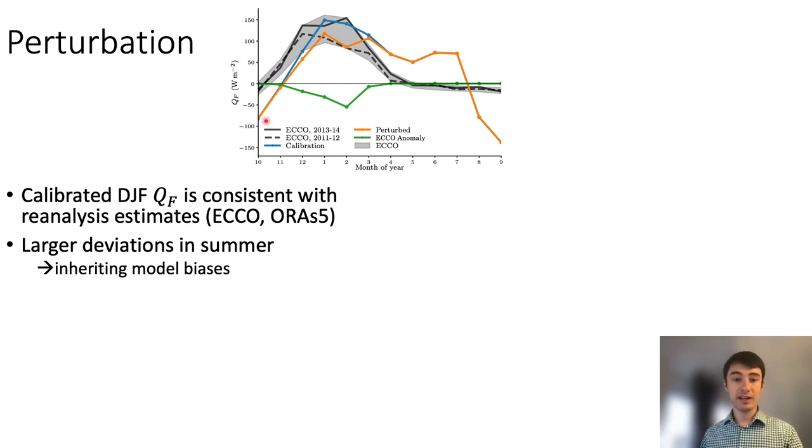In the blue line, overlaid by the orange, is shown the heat convergence as calibrated from our calibration run. In the DJF season, which is the focus of this work, the agreement is quite good. We see much larger deviations in other seasons, in particular in summer. We believe this to be the case because the calibration inherits model biases, and the Q-flux inherits this since the model is constrained to reproduce observed SST.